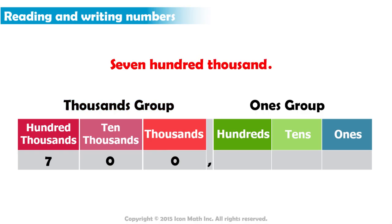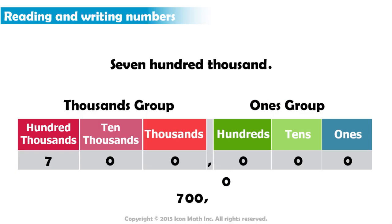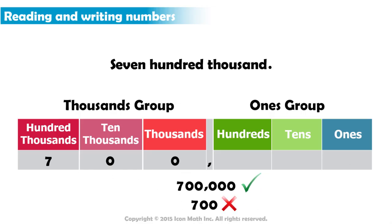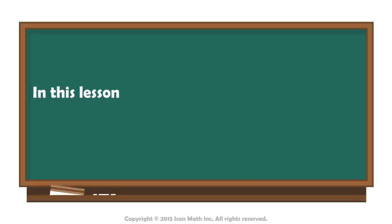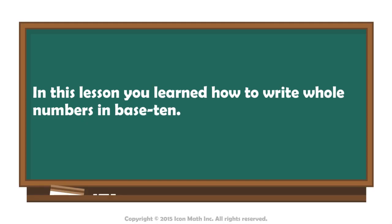As you can see, we finished reading the number, but we do not have a value for the ones group. So we need to write zeros in the remaining places. There is a number before these zeros — the 700 — so these zeros are placeholders. They must appear in the number to show that we have 700,000 and no other values. If we did not add these three zeros in the hundreds, tens, and ones places, the number would appear as 700. In this lesson, you learned how to write whole numbers in base 10.